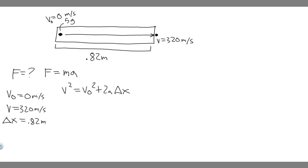So I'm just going to be plugging in the numbers. So v squared is just going to be 320 squared is equal to v sub 0, which is 0. 0 squared is still 0. And then it's going to be plus 2 times a, which is what we're solving for, multiplied by the change in x. The change in x is just going to be 0.82.